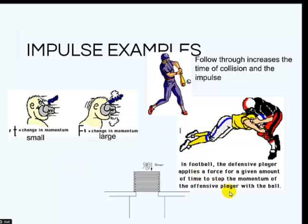In football, the defensive player applies a force for a given amount of time to stop the momentum of the offensive player with the ball. The shorter that time is then the greater the force they are going to be applying on each other. And then this is using a karate chop to break a bunch of wood.